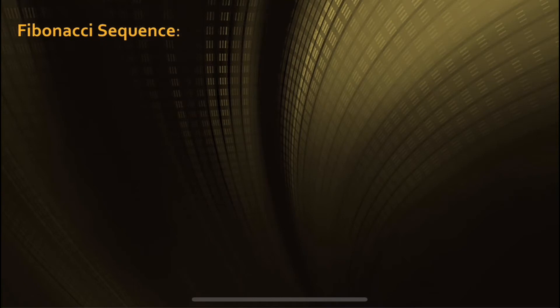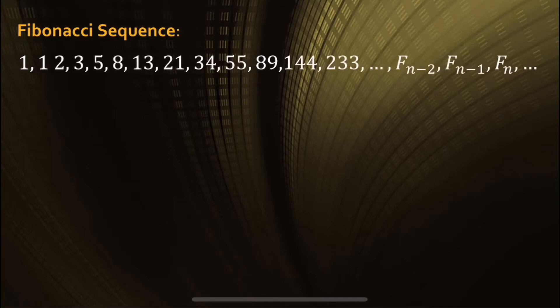The Fibonacci sequence was first introduced in a book written by an Italian mathematician, Leonardo Fibonacci, in the year 1202. And how it works is that each number in the sequence is the sum of the two preceding numbers. So 1 plus 1 is 2, 2 plus 1 is 3, 2 plus 3 is 5, and so on.